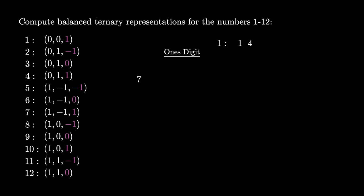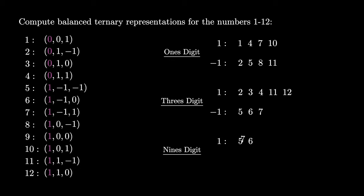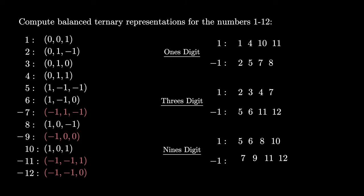When we look at each position, something interesting happens. In the 1's position, there are four numbers with a digit of 1, four with a digit of negative 1, and four with a digit of 0. In the 3's digit, however, there are five numbers with a 1, three with a negative 1, and four with a 0. In the 9's position it's even less balanced — eight numbers use a digit of 1 and zero use a digit of negative 1. But we can make a slight modification by strategically negating the numbers 7, 9, 11, and 12. After doing so, each position has exactly four numbers with a digit of 1, four with a 0, and four with a digit of negative 1 — a perfect balance.